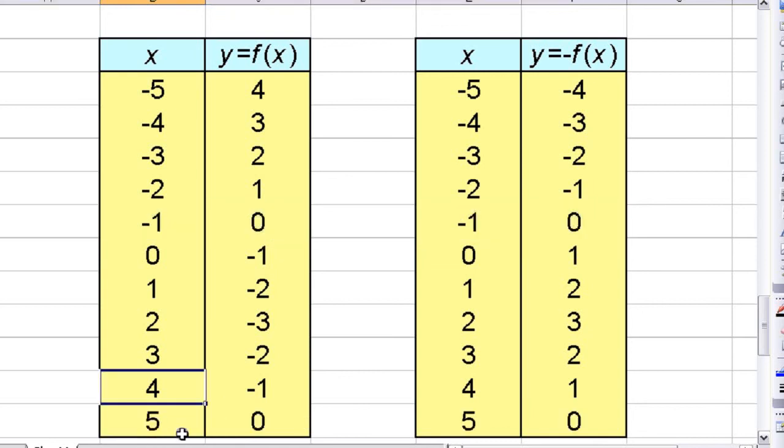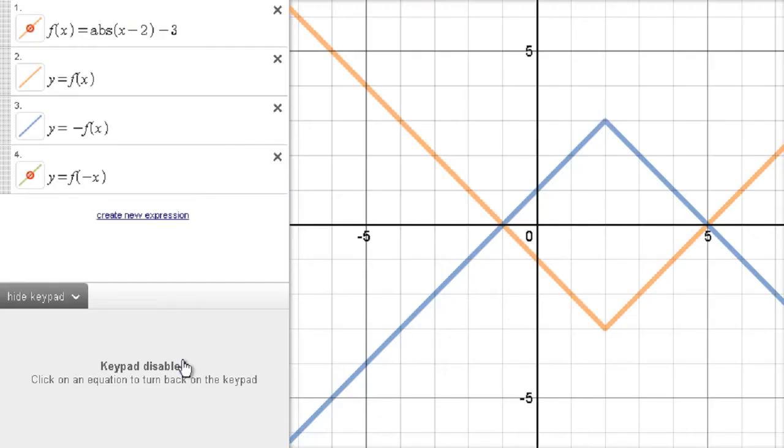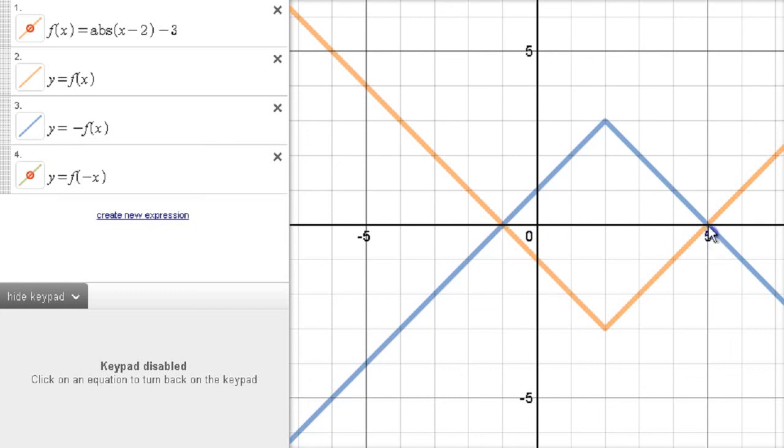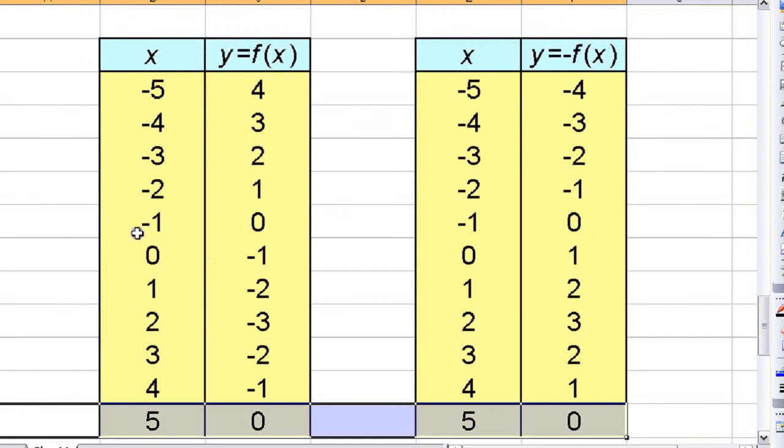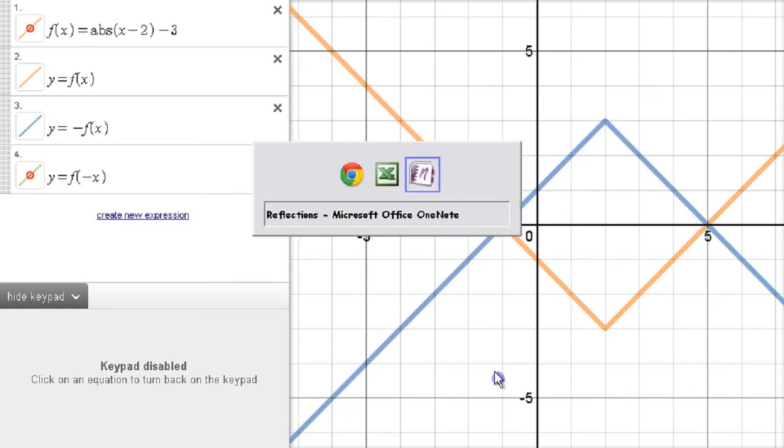I'm guessing if we went one more here, we'd find another invariant point. There's the other invariant point. Because when you look back at the graph, there was two. There's two places here. Negative 1, 0, and 5, 0. Those are the two invariant points. When you look at the table, negative 1, 0 is one of them. Negative 5, 0 is the other one. Those points don't change. Every other point, y value switches. But those points don't change. Those are called the invariant points.